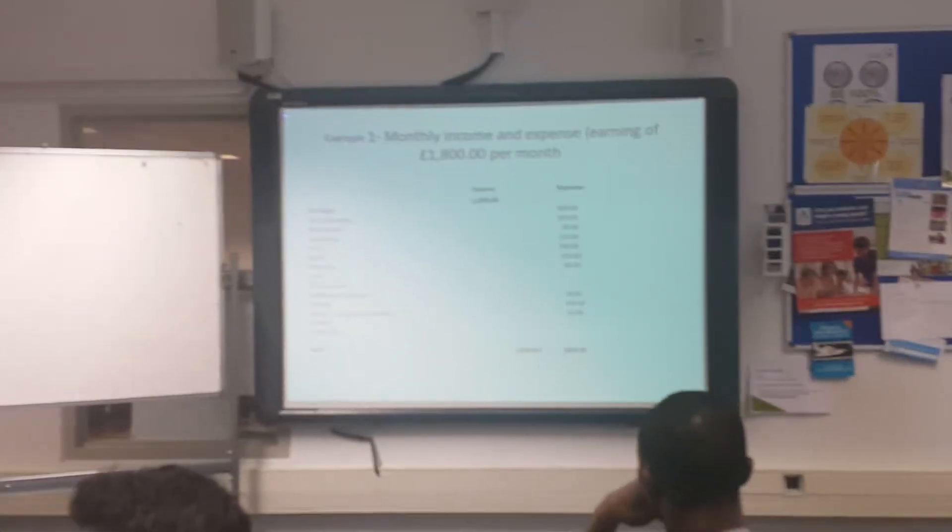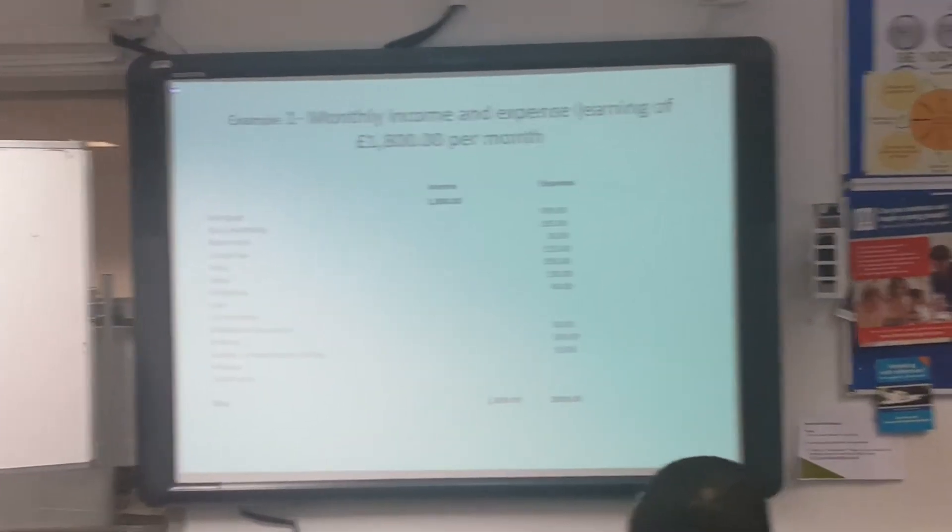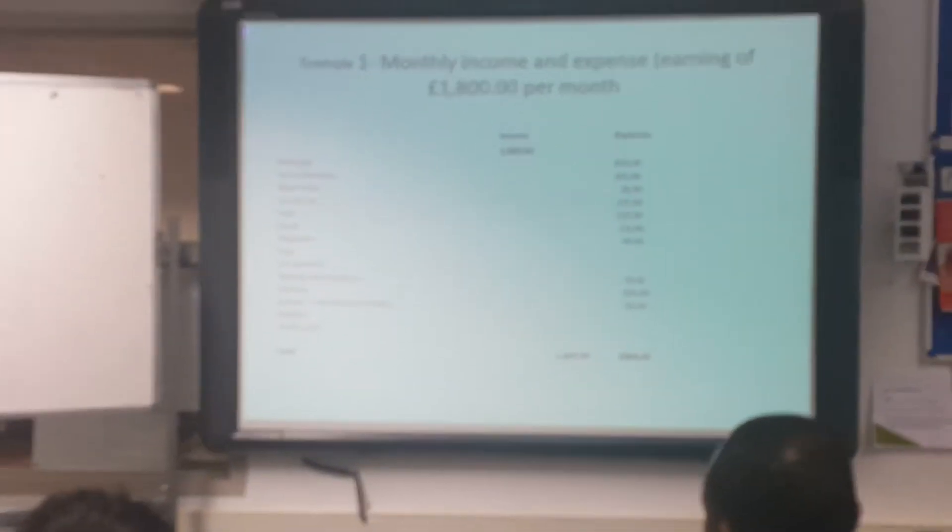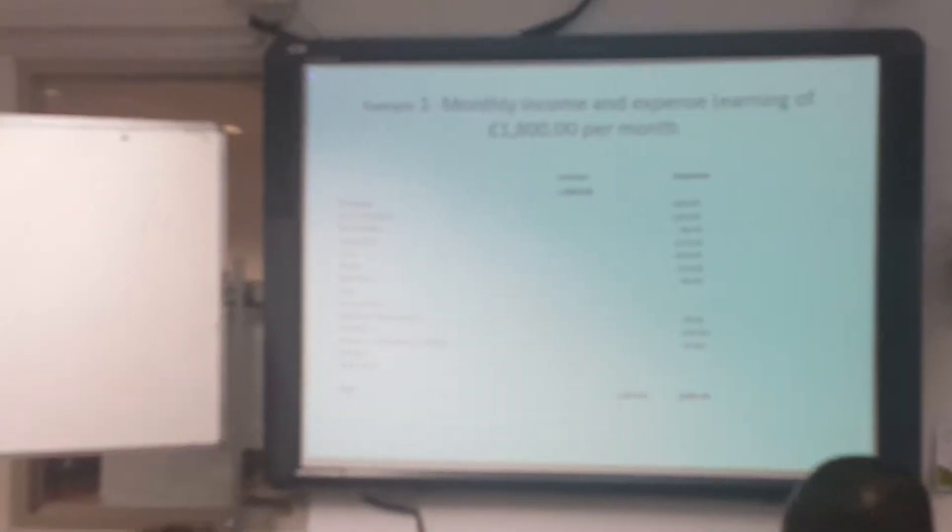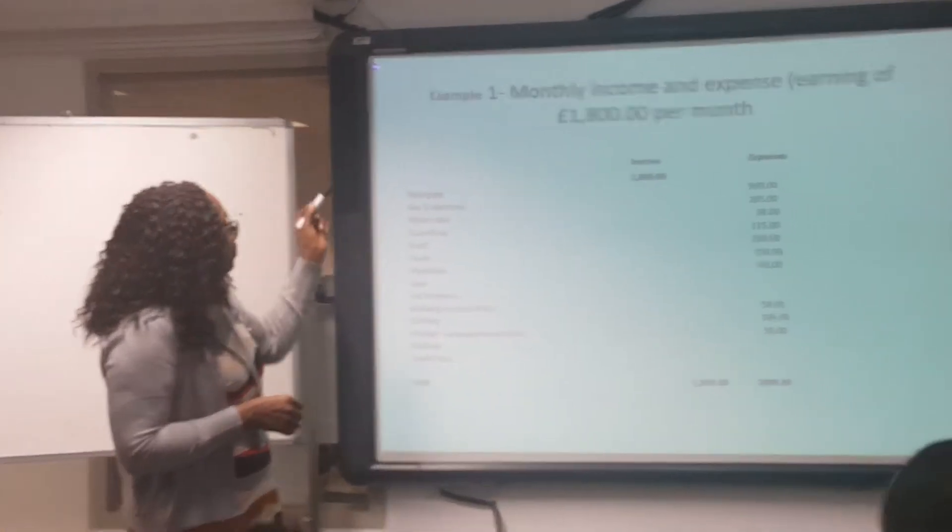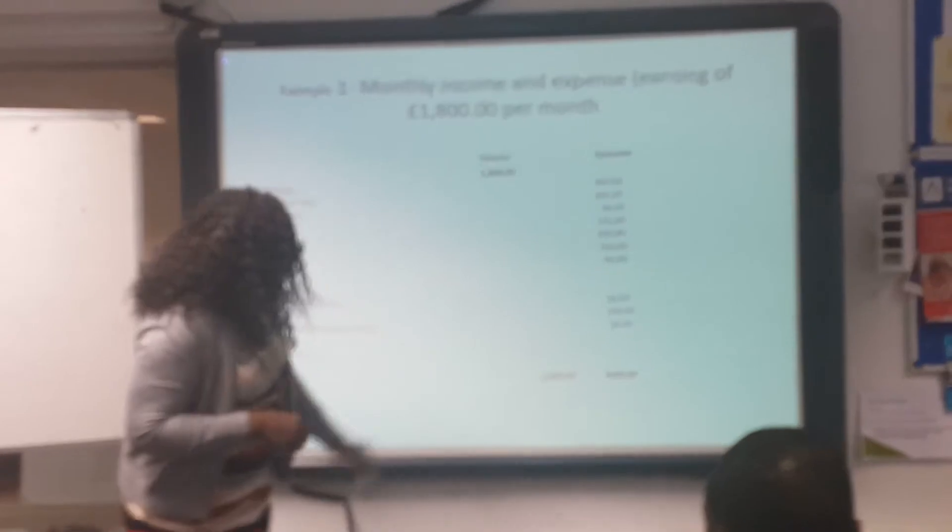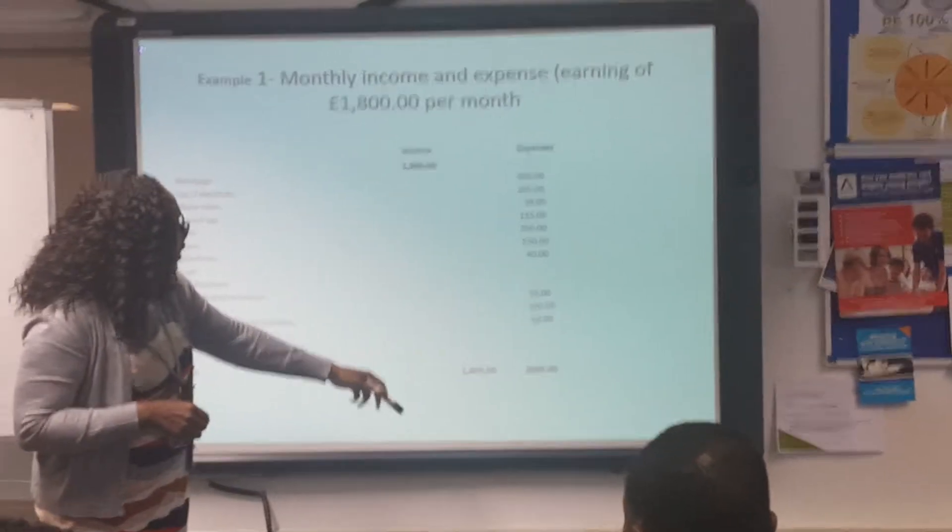The monthly income and expense earning of £1,800 a month. The figures we have, so the income is £1,800. The expenses came up to £2,006 for the month.